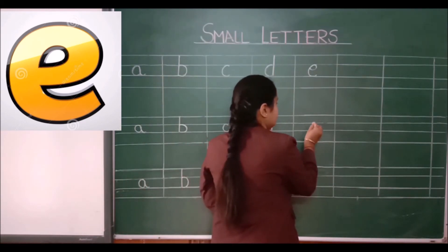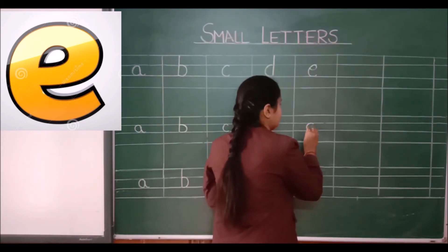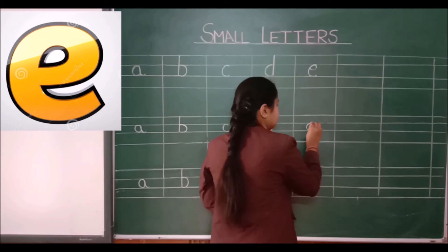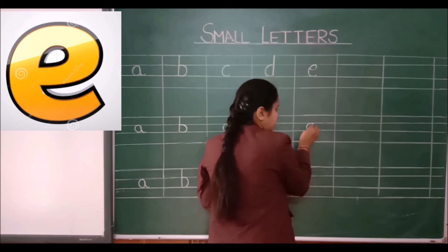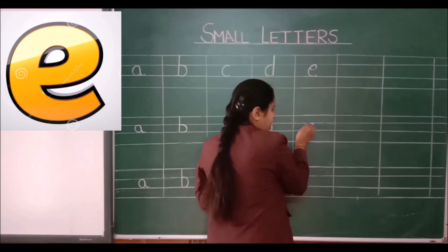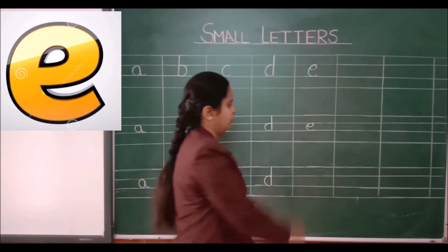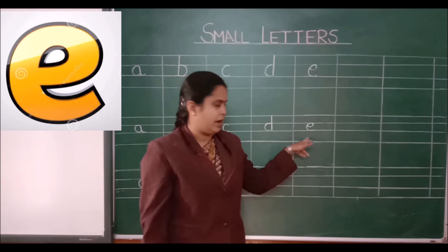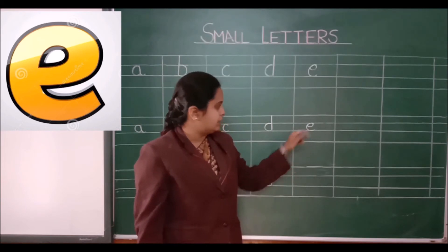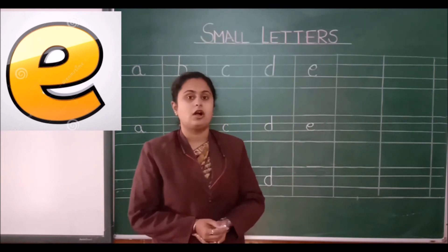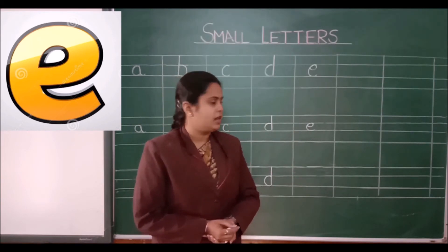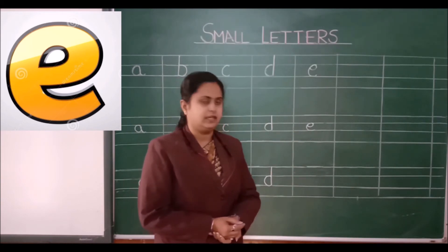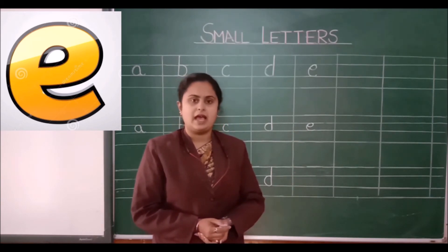First you have to make a curve like this and take a round like this. You have to take a round like this. This is called small letter E, E for elephant.